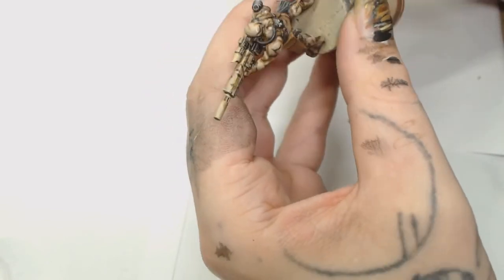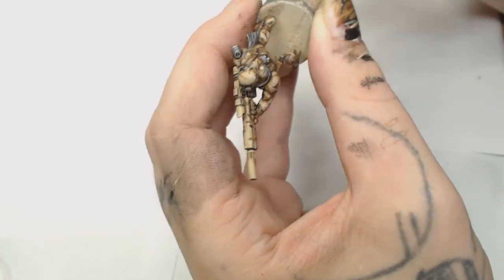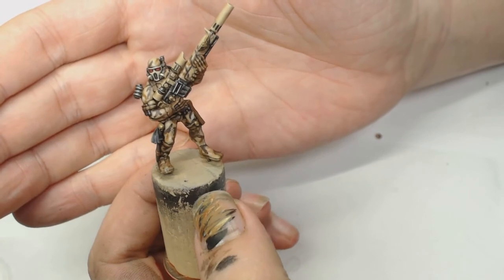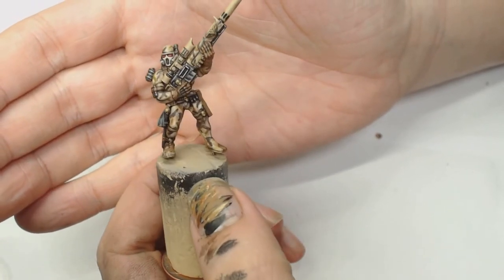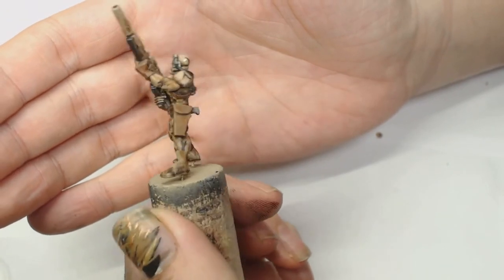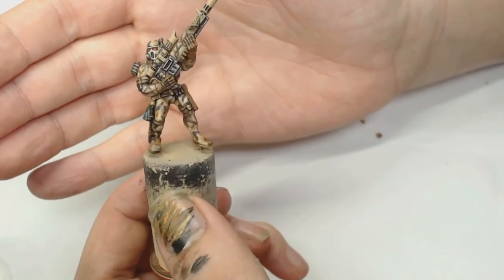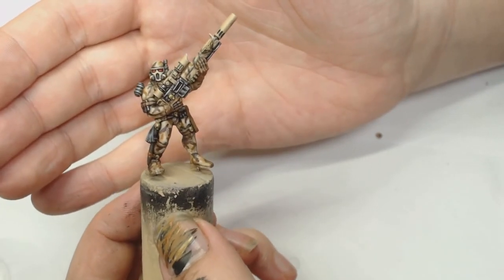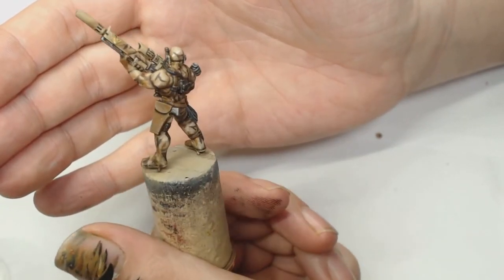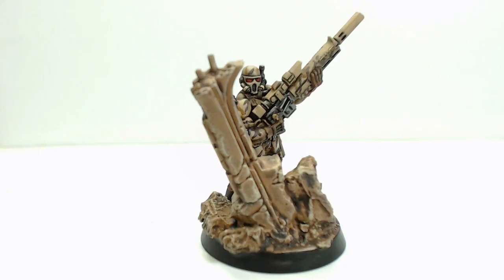There you have it - one Vindicare Assassin in desert camo. I was quite chuffed with the result of this. It wasn't too difficult to do. I hope this helps you guys if you want to do anything in a camo pattern, not just a Vindicare Assassin. Thanks for watching, I'll catch you in the next one. Hit like, hit subscribe, and share with your friends.